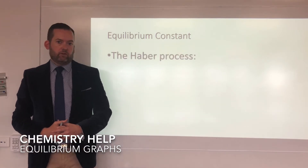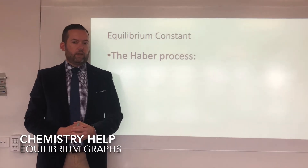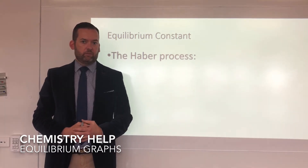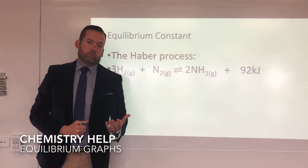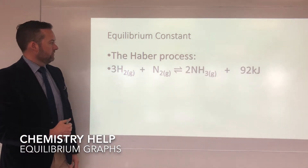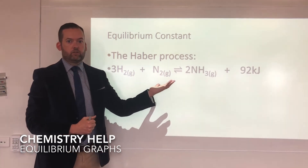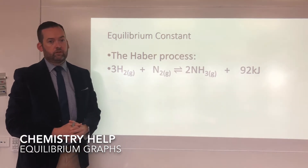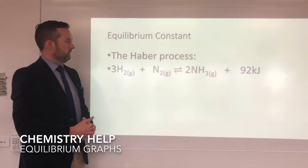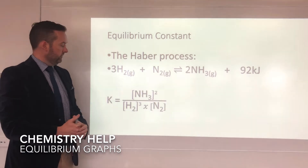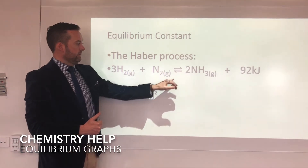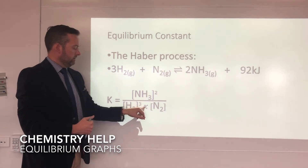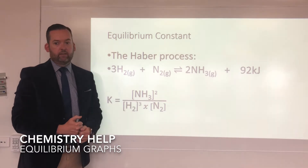If we look at a reaction like the Haber process — a really common one — we're going to use this example all throughout this video because it is an industrial process, it's very important, and it is easy to use to help us look at changes to equilibrium. To calculate the equilibrium constant for the Haber process, we first need our reaction: three hydrogen molecules plus one nitrogen molecule makes two ammonia molecules. It's an exothermic process because energy is released as a product. To calculate the equilibrium constant, it's ammonia to the power of two, divided by hydrogen to the power of three times nitrogen to the power of one. That gives us our equilibrium constant.